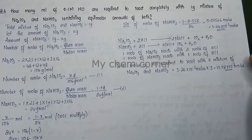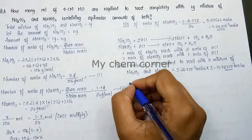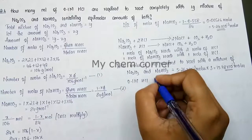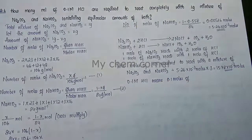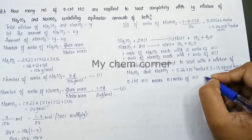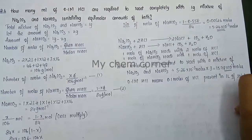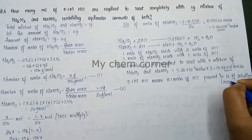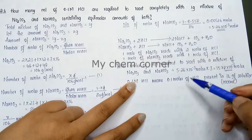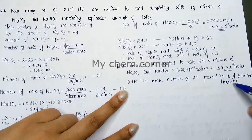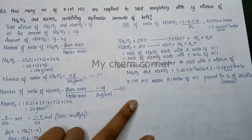Now, 0.1 molar HCl means 0.1 moles of HCl in 1 liter (1000 ml) of solution. We need to find the volume x ml that contains 15.78×10⁻³ moles of HCl. Using the unity method: if 0.1 mol is present in 1000 ml, then 15.78×10⁻³ mol is present in x ml.